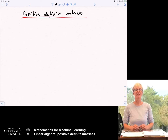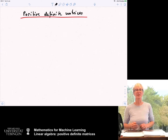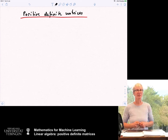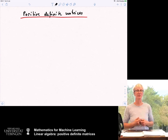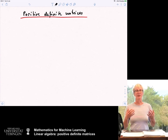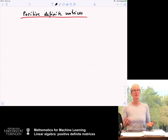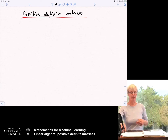After we've seen orthogonal matrices and symmetric matrices, there is one more class of matrices that is really important in machine learning, and that's positive definite or positive semi-definite matrices.